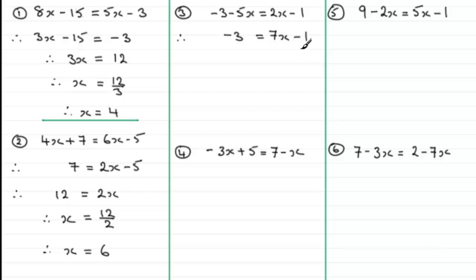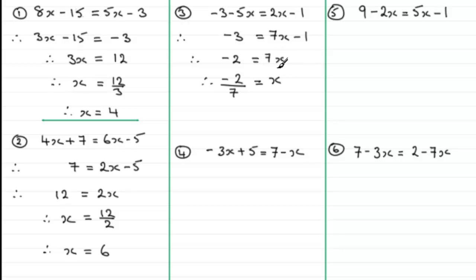I now need to get rid of the minus 1 by adding 1 to both sides. Minus 3 add 1 is minus 2. Adding 1 to the right means minus 1 add 1 is zero, leaving just 7x. Dividing both sides by 7: minus 2 divided by 7 equals x. Writing x on the left, x equals minus 2 over 7. A minus divided by a positive value gives a negative overall, so x = −2/7.